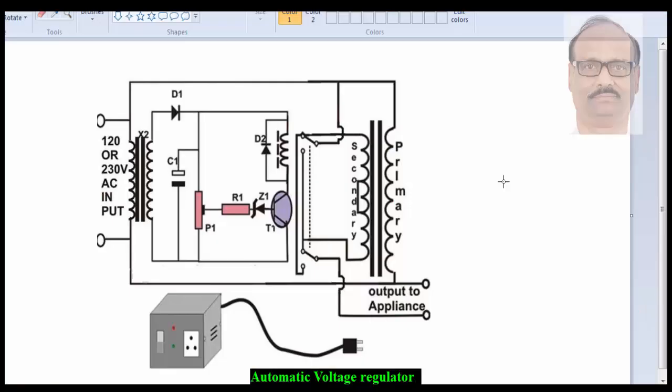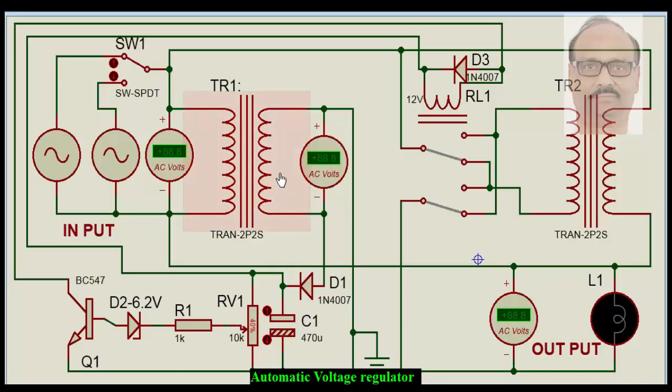This circuit has been picked up from the internet and it is one of the simplest forms of voltage stabilizer or voltage regulator. Here we have a small transformer which is for very little current in the secondary, maybe about 200 milliamps which will be good enough. 200 or 300 milliamps will be good enough for developing a DC.